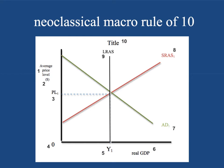Here we go — the neoclassical aggregate supply aggregate demand diagram. We want to make sure that when we draw this diagram, we start with the same compulsory elements. Every time you get an aggregate demand aggregate supply question, there's going to be a beginning. You start with this graph — the macro Rule of 10. Then there's always some sort of event: a supply-side shock, an improvement in the quantity and quality of factors of production moving the LRAS curve, or a change in aggregate demand shifting the AD curve outward or inward.